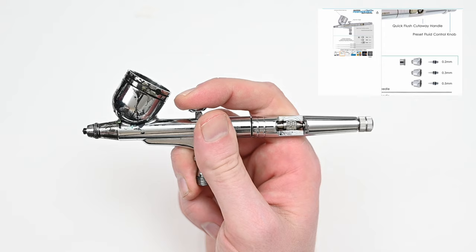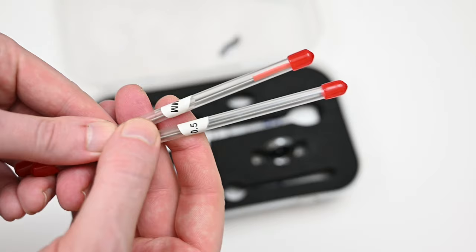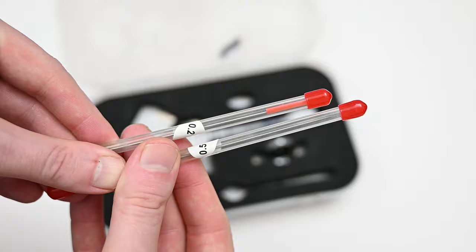And for $40 US dollars, you not only get the airbrush, but you also get three different nozzles and needles. This includes a 0.2 millimeter, a 0.3 which comes equipped in the airbrush, and a 0.5 for spraying thicker paint.